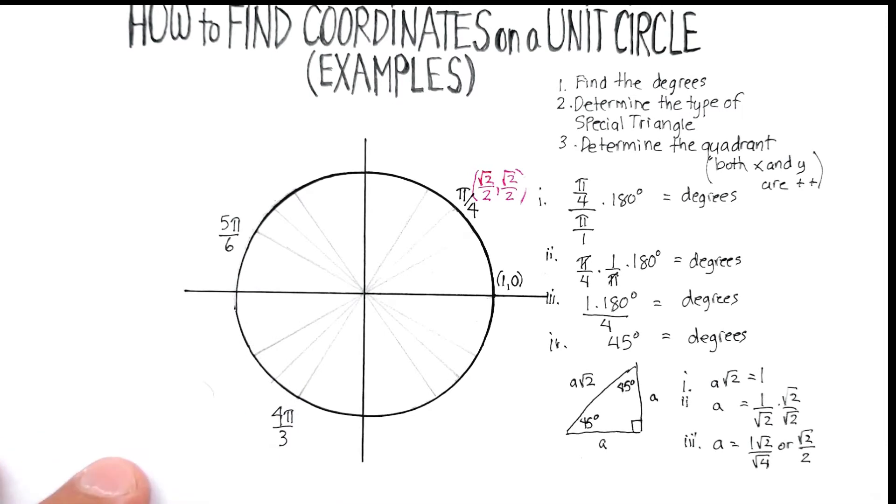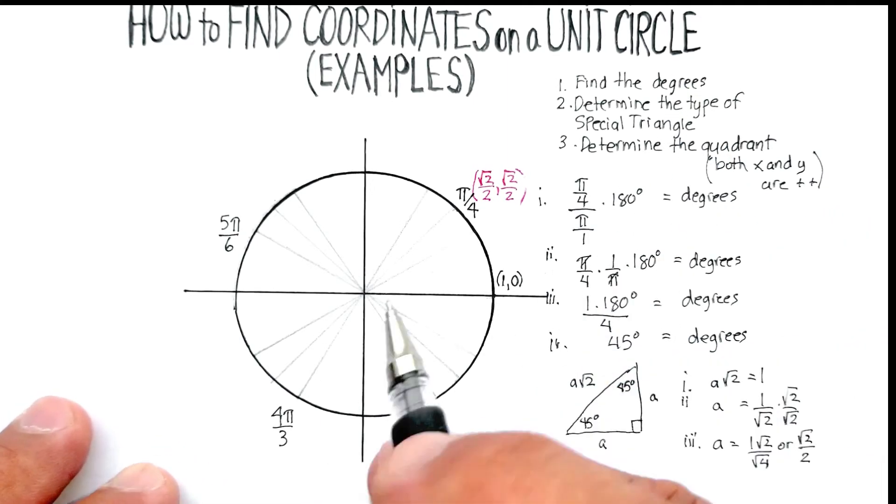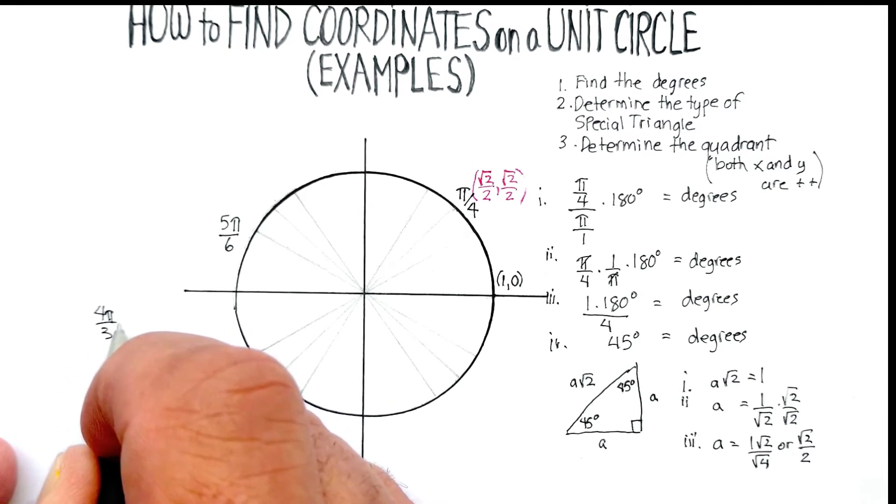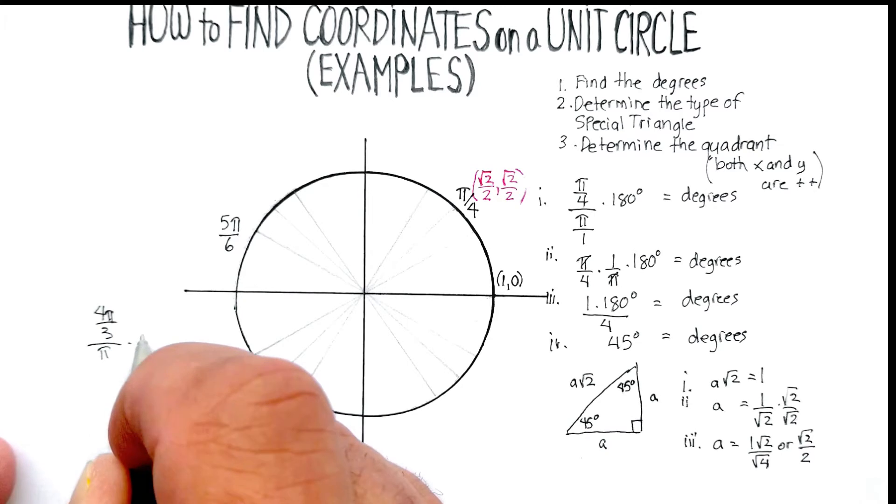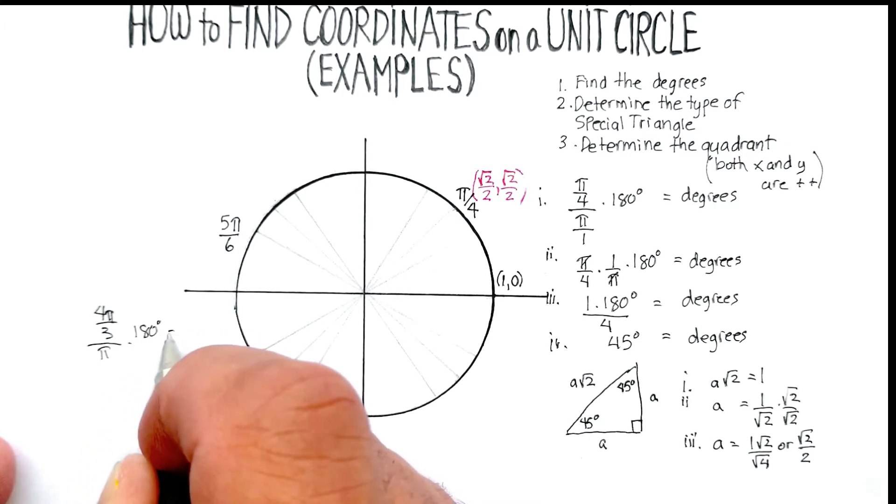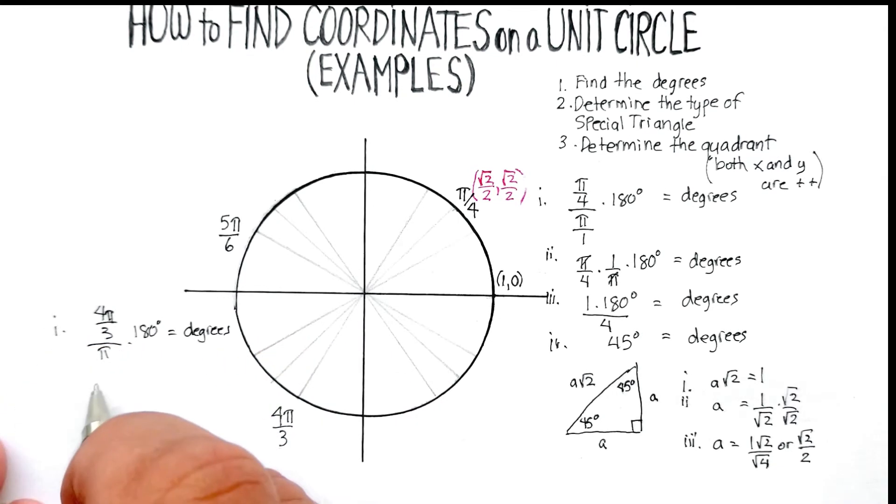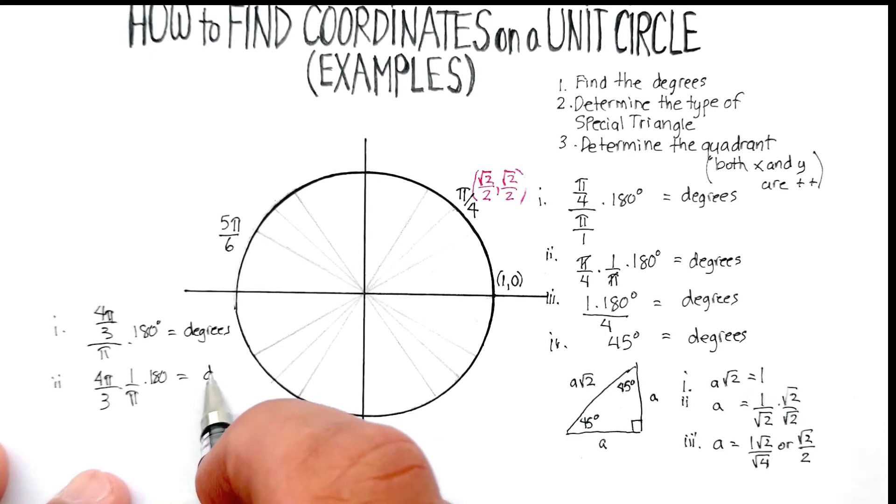Okay, now you're going to do that at each one of these other locations as well. Let's do one real quickly. Let's just do this one over here. So we have 4π over 3, which is going to go through these same steps. So I'm going to say 4π over 3 divided by π times 180 will give me a number of degrees. Multiply by the reciprocal, I get 4π over 3 times 1 over π times 180, number of degrees.